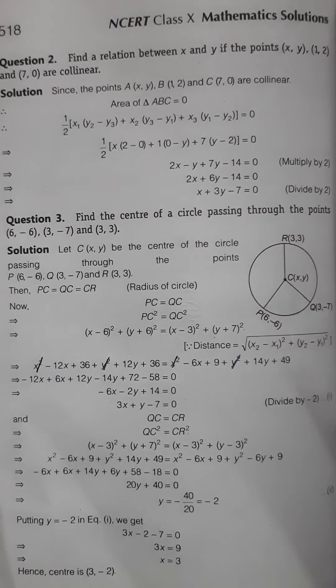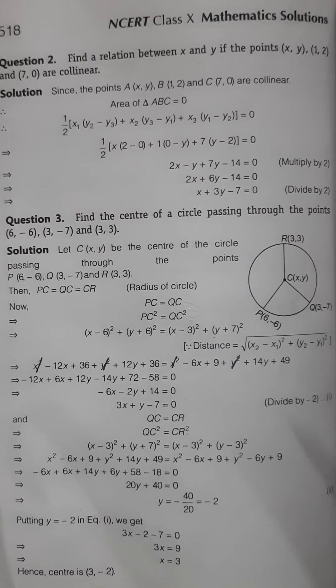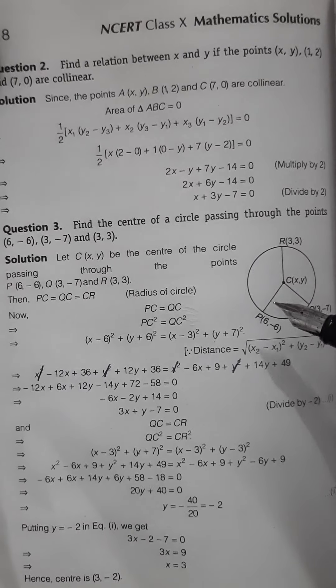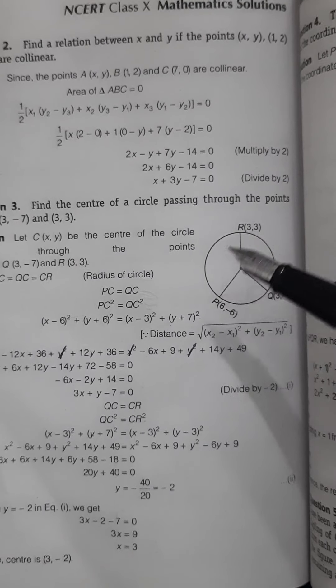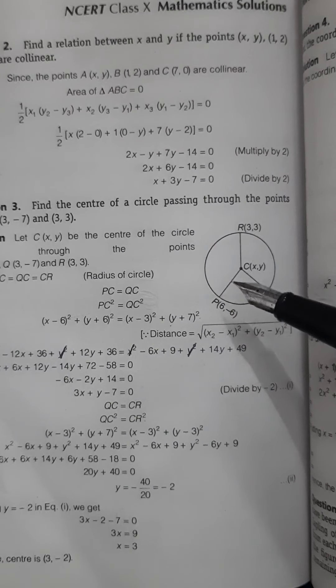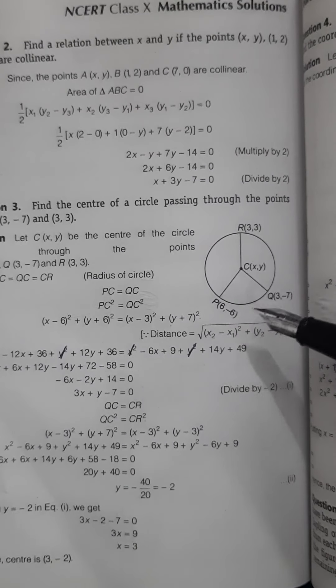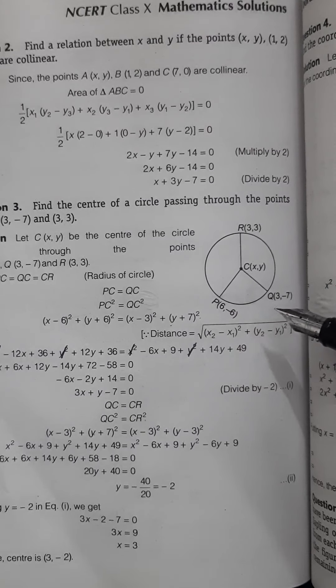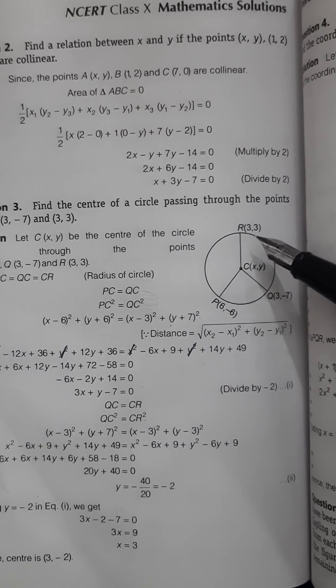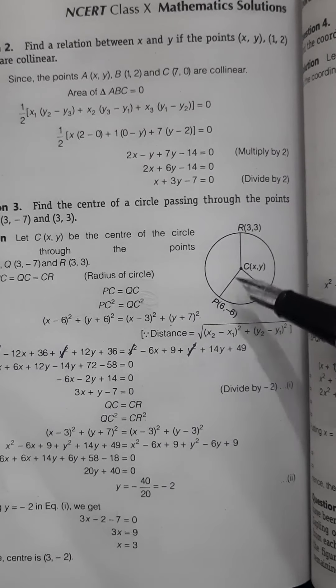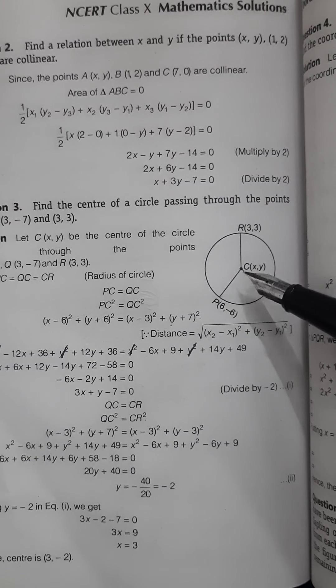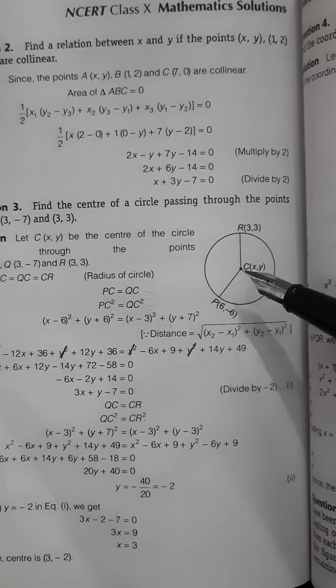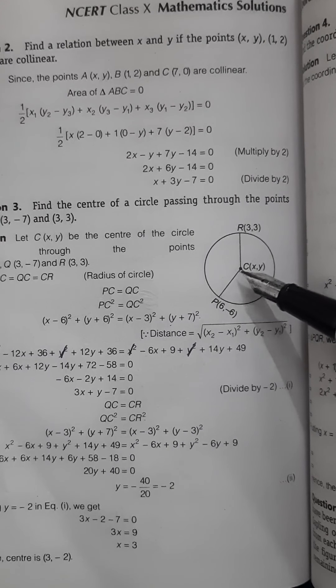Then question number 3. Here there's a circle. Find the center of the circle which is passing through the points (6, -6), (3, -7), and (3, 3). These are the three points on the circle, and we have to find the coordinates of the center.